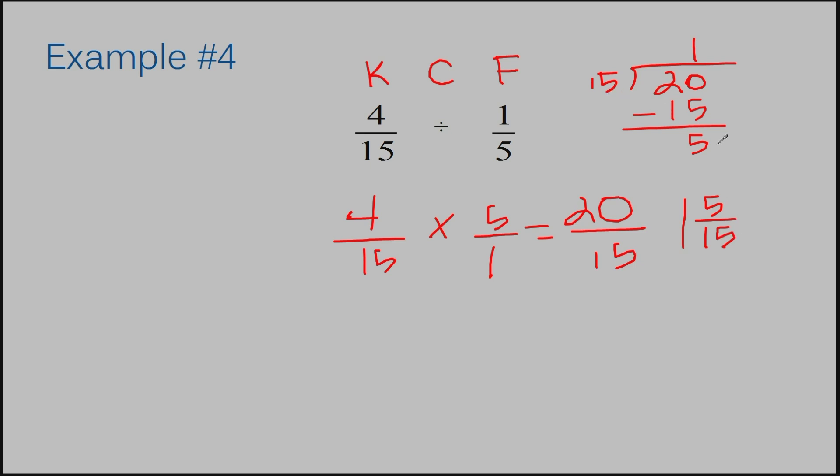This fraction can simplify. I can divide 5 into my numerator and my denominator. The 1 just comes over. We're only simplifying the fraction part. 5 divided by 5 is 1, and 15 divided by 5 is 3. My answer to example number 4 is 1 and 1/3.